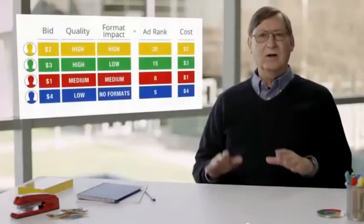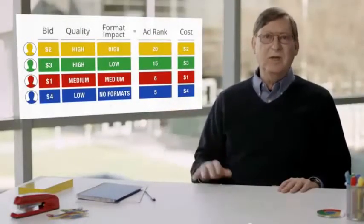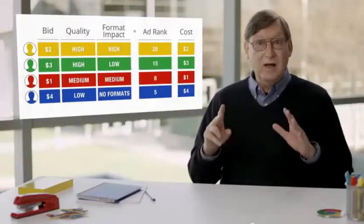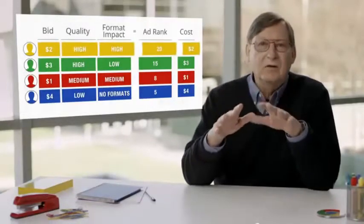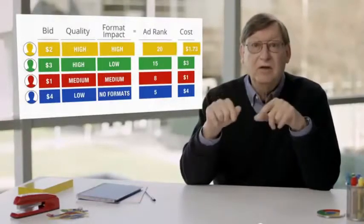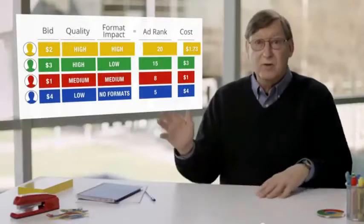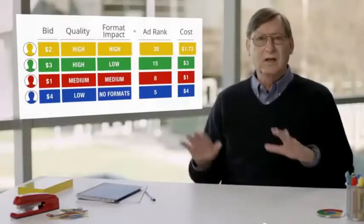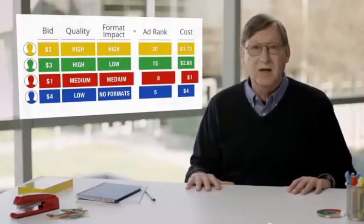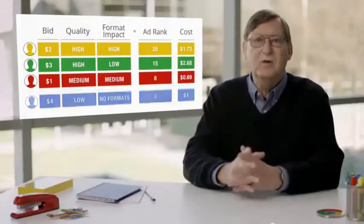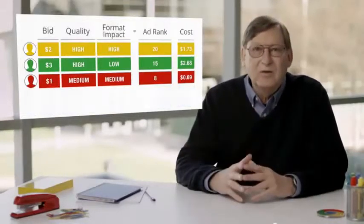So now we know how the ads are ranked, but how much do you actually pay for a click? You pay the minimum amount necessary to maintain your position and any formats that are shown with your ad. Let's get back to our ad rank table and talk about the advertiser in position 1. He's competing with the advertiser in position 2, so the amount he has to pay is just enough to beat the ad rank of the advertiser in position 2. For example, although he bid $2, he could have bid as low as $1.73 and still outranked the advertiser below him — so that's what he pays, $1.73. Similarly, the amount the advertiser in position 2 has to pay is the minimum needed to beat the ad rank of the advertiser in position 3, and so on. The top-ranked advertiser winds up paying less than what he was actually willing to pay for a click.